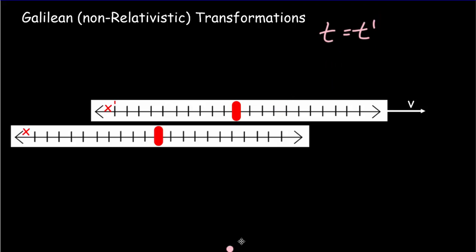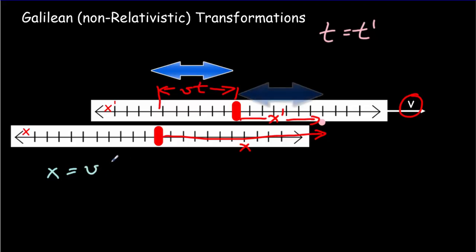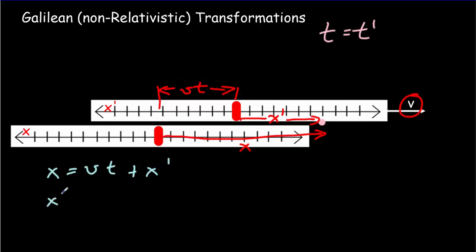Let's pick out some point. It would have a value in the primed frame, x-primed, and a value in the un-primed frame, which we'd call x. We know that the distance the frames have moved relative to one another is going to be the speed v times however much time has elapsed. So we can write: x must be equal to vt plus x-primed. Or going in the other direction, x-primed must be equal to x minus vt.